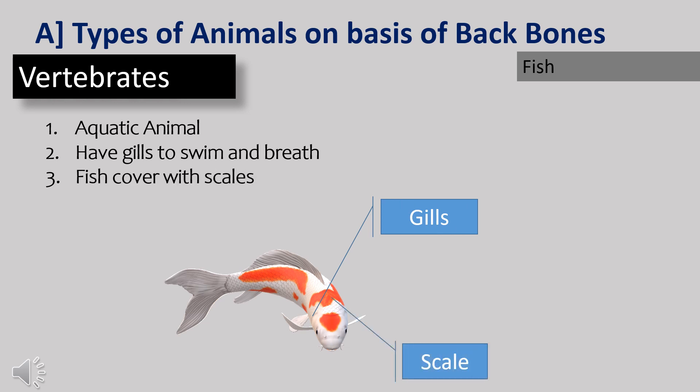Fish are aquatic animals. They have gills to breathe and fins to swim in water. The body of a fish is covered with scales. An example is the shark.